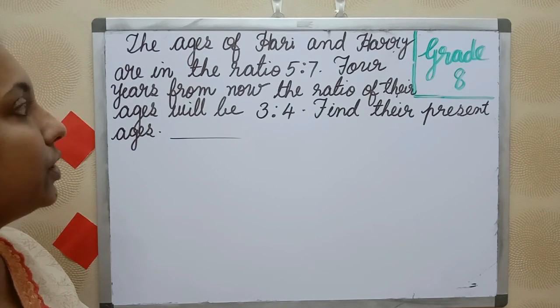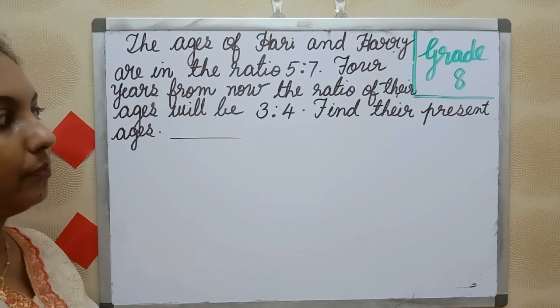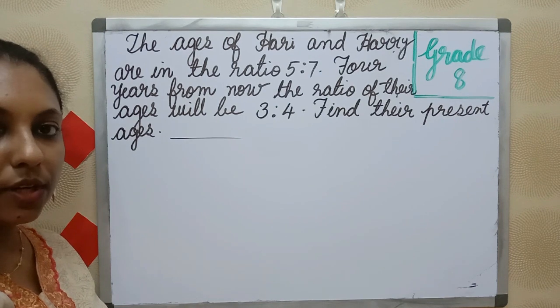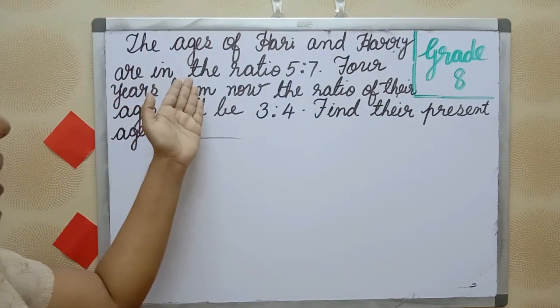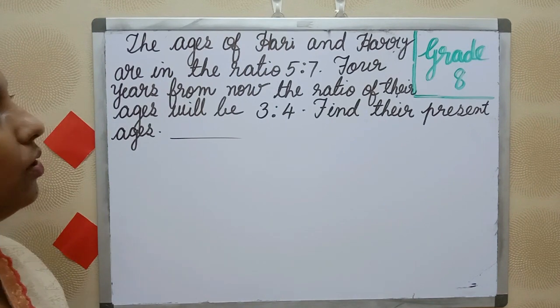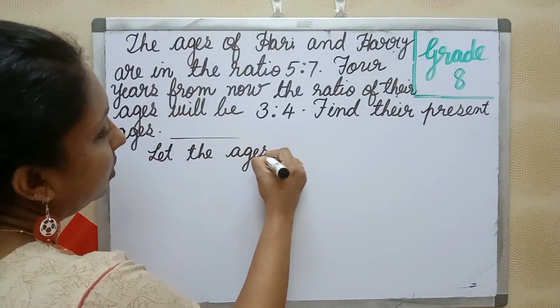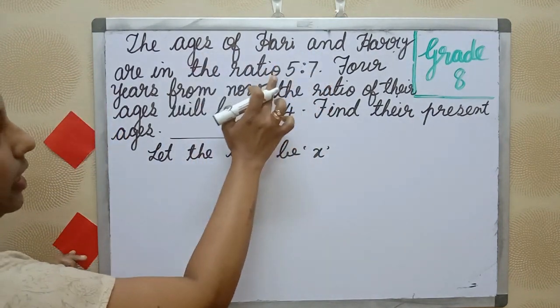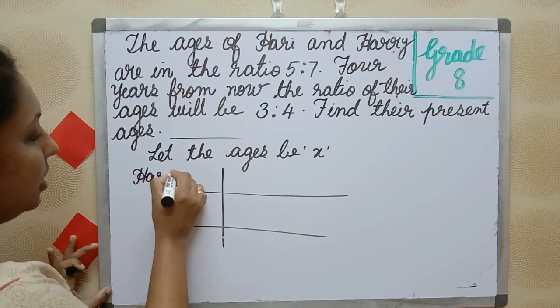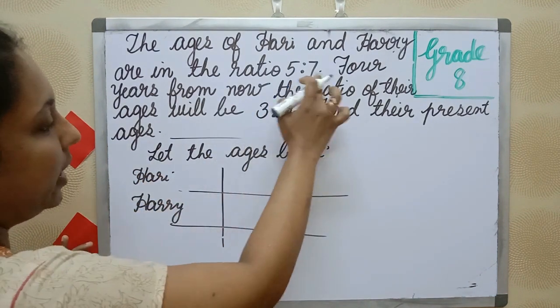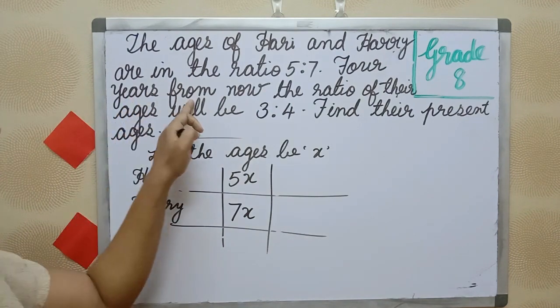The ages of Harry and Harry are in the ratio 5 is to 7. Four years from now, the ratio of their ages will be 3 is to 4. Find their present ages. First, you have to read the problem and note what is given and what is required. Let the ages be x.